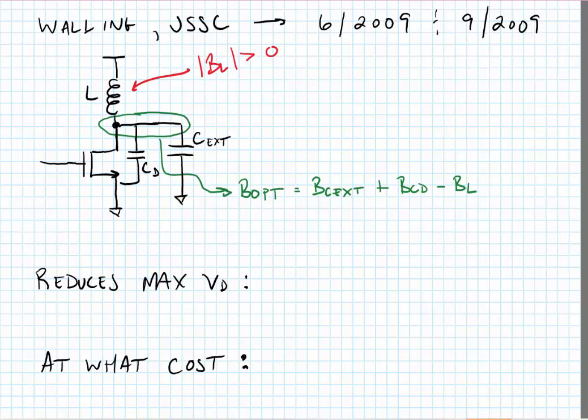Nominally, the total susceptance of the drain would be equal to the susceptance of the extrinsic capacitance C_EXT, plus the susceptance of C_drain, which is the drain parasitic capacitance of the transistor, less any susceptance that we see in the choke. Now, if we add an ideal choke, B_L would be equal to zero.